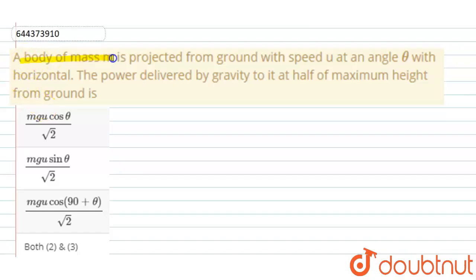A body of mass m is projected from ground with a speed u at an angle theta with horizontal.